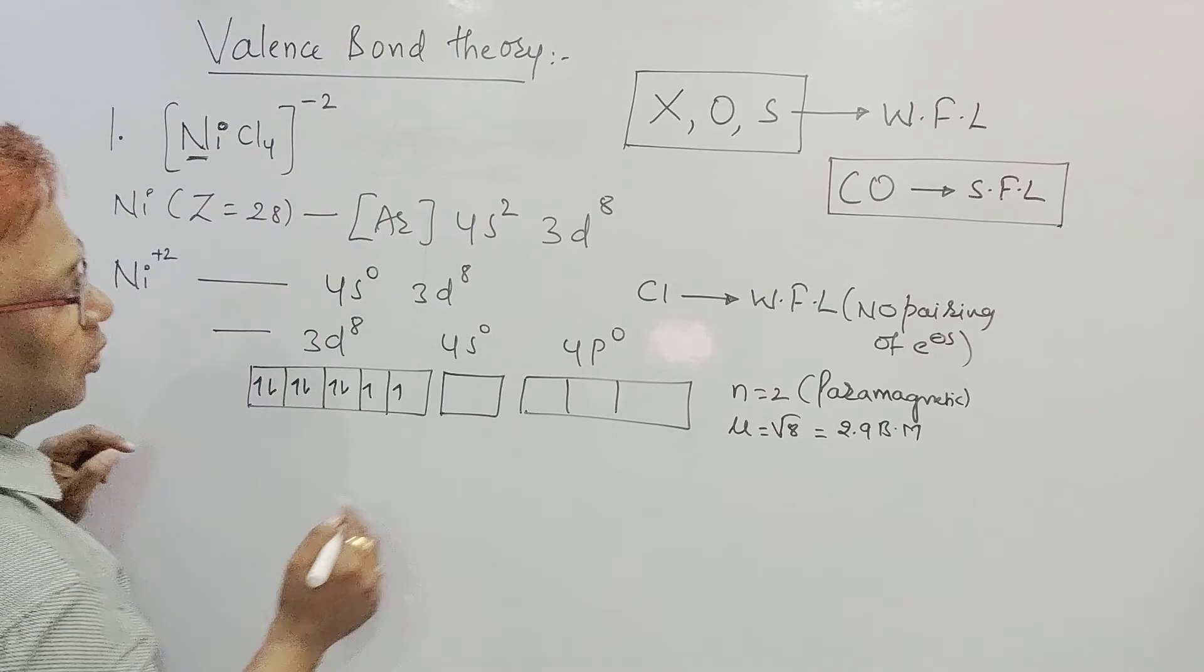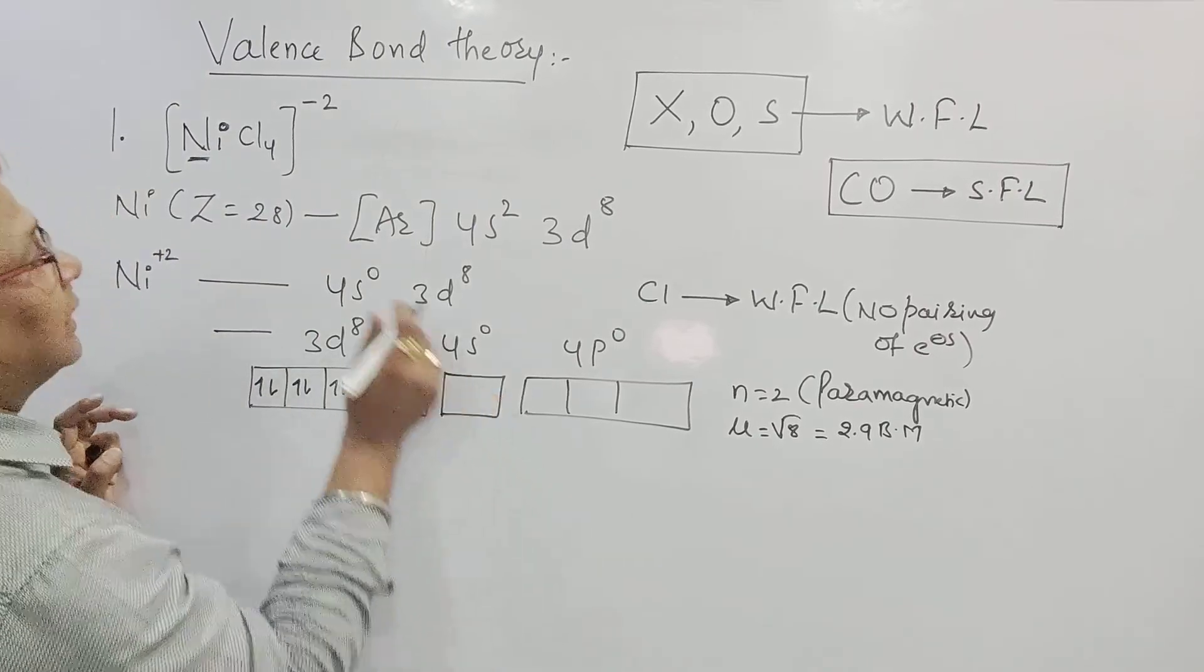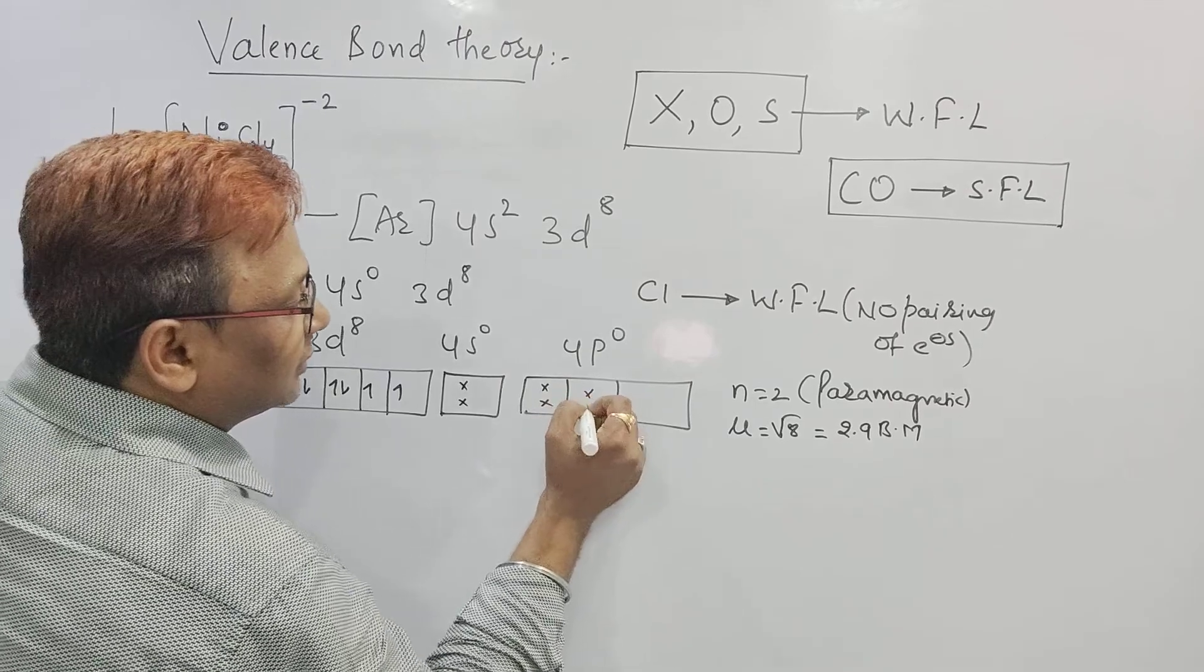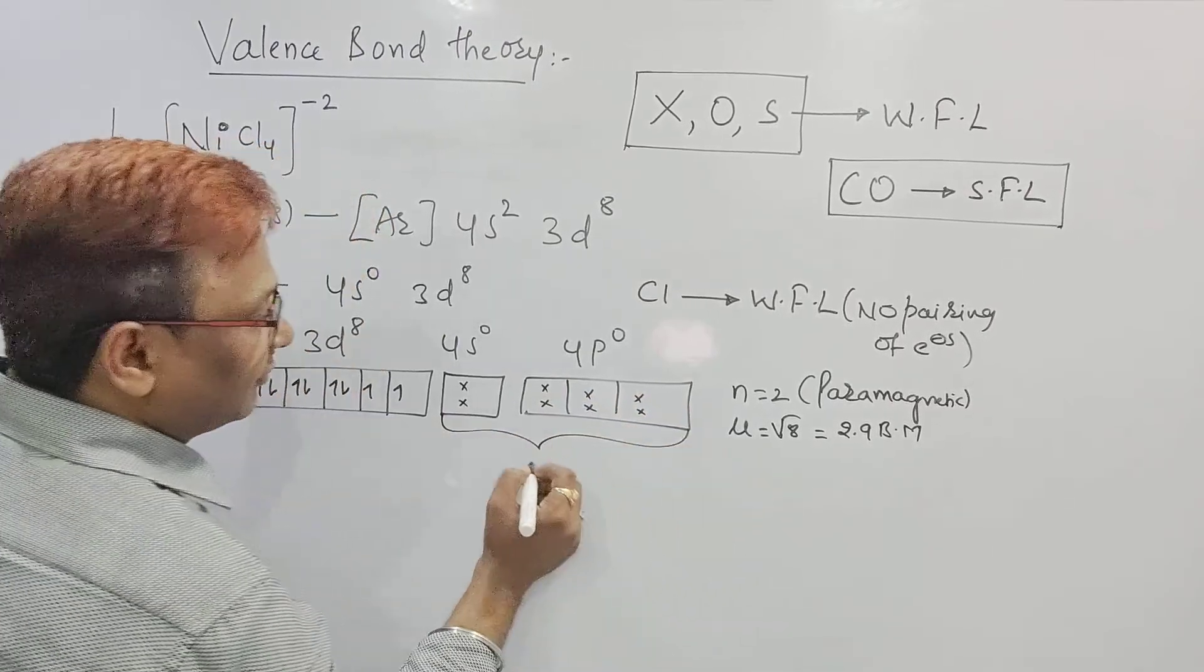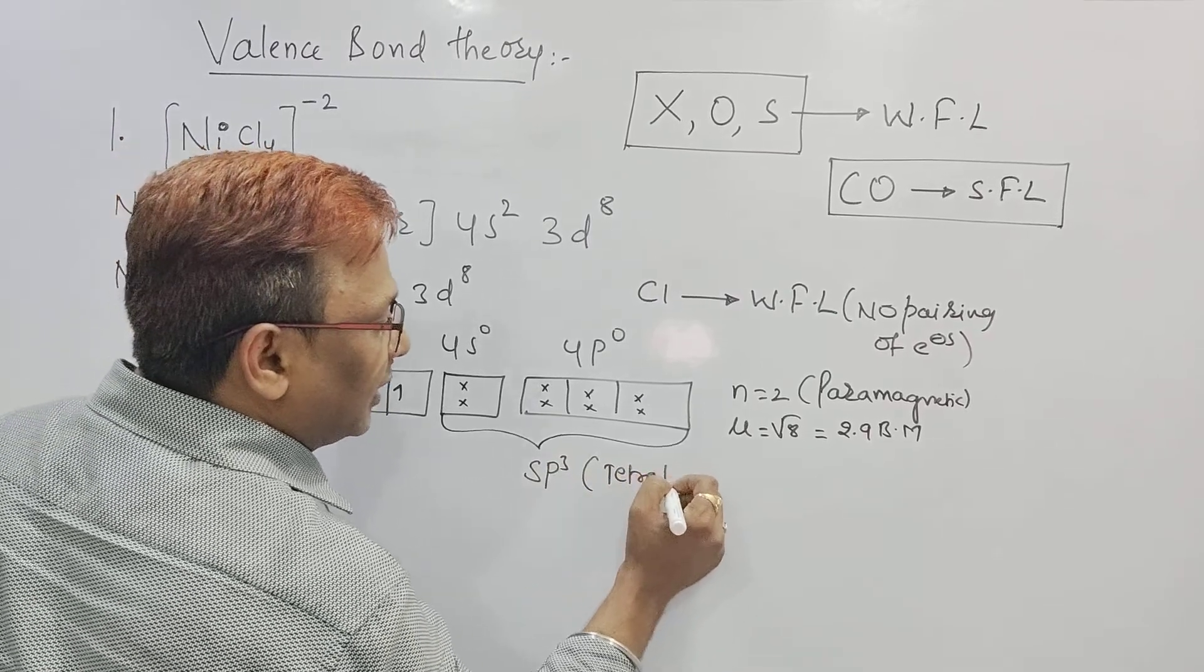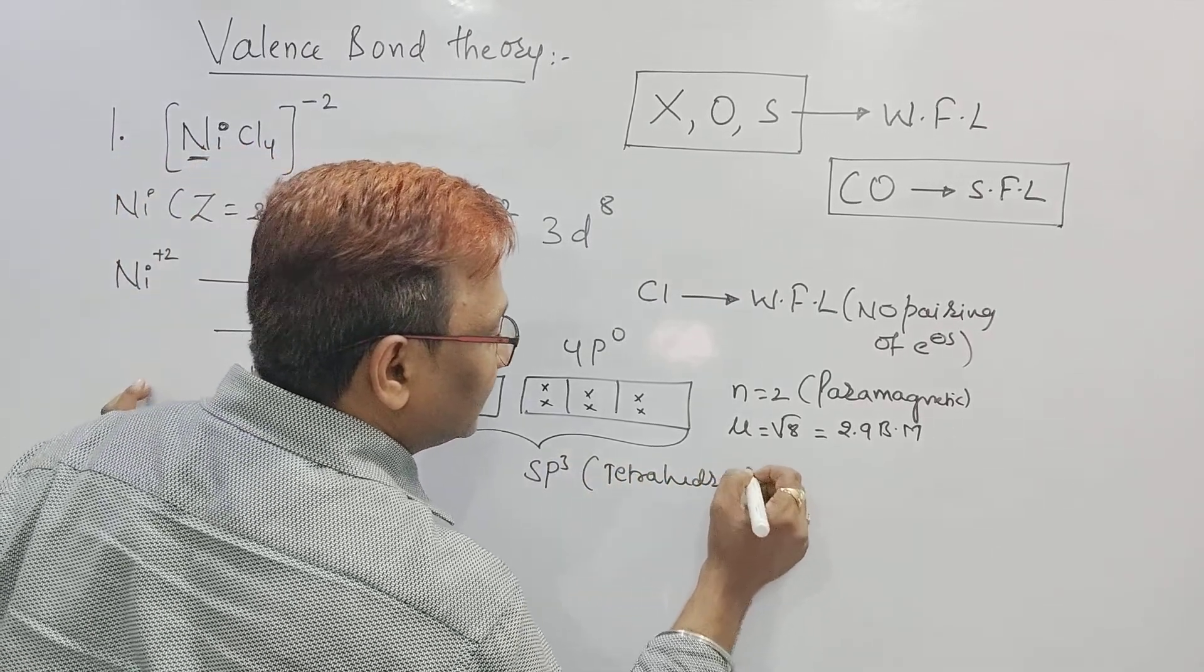Magnetic moment 2 point something, paramagnetic in nature. And how many ligands are there? 4. So we want 4 vacant orbitals. 1 Chlorine can donate to the 1st, 2nd, 3rd and 4th. And this is the configuration where we are getting SP3. That means it is tetrahedral coordination.